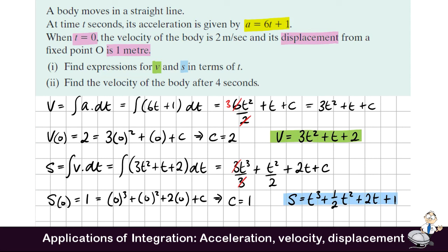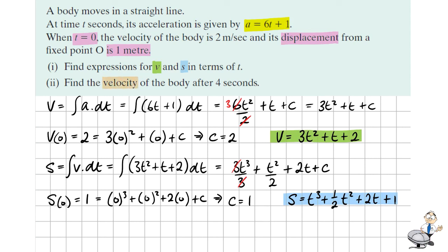And the final part of the question, we're asked to find the velocity of the body after 4 seconds. So we'll substitute the value 4 for t in the velocity equation. So this becomes 3 times 4 squared plus 4 plus 2. 4 squared is 16 and 3 times 16 is 48, and 48 plus 6 is 54. So our answer is 54 meters per second.